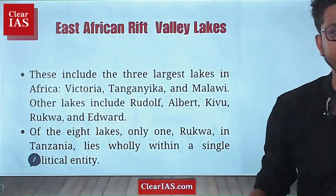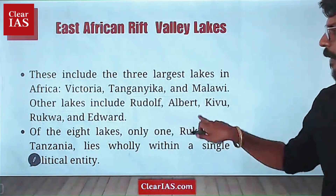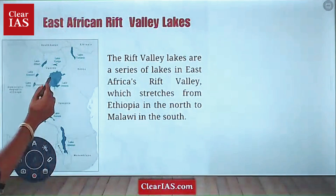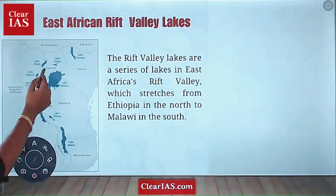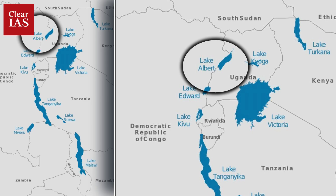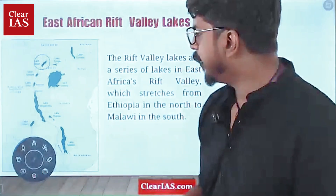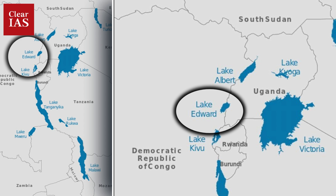Let's find and mark some of these lakes. Lake Victoria — just above to the north, can you find Lake Albert? It is to the north-west of Lake Victoria. Below that, can you find Lake Edward? Then you have Lake Kivu.